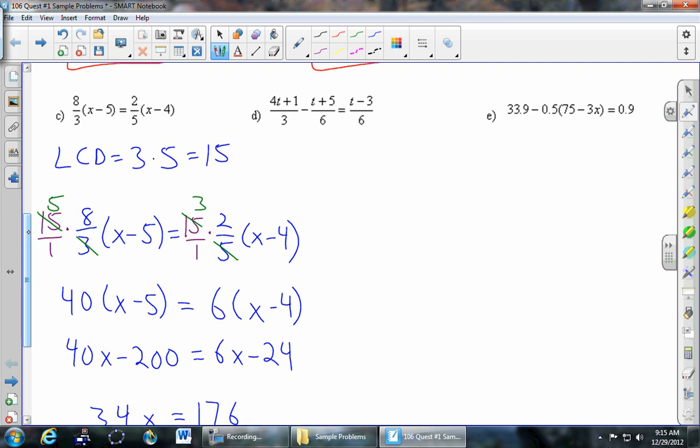Part D. 4T plus 1 over 3 minus T plus 5 over 6 equals T minus 3 over 6. So it's the same idea here. Again, to get rid of those fractions, we're going to multiply everything by the lowest common denominator. I see a 3, I see a 6, and I see another 6. And the lowest common denominator for those three denominators is just 6. Multiplying everything by 6 will get rid of all the fractions.